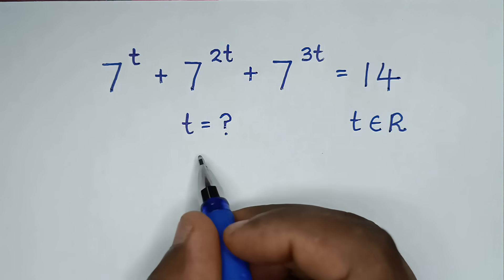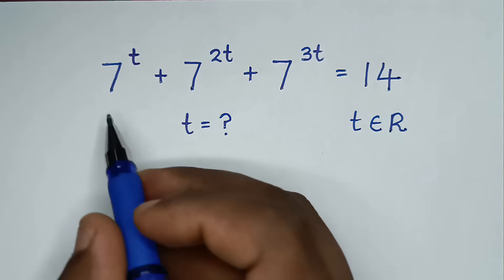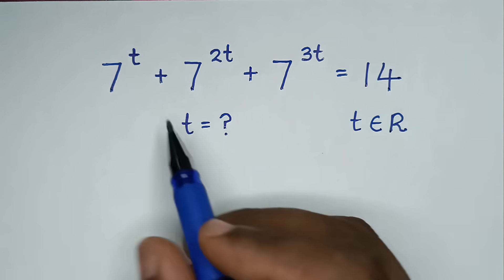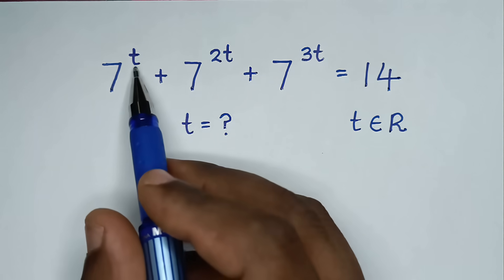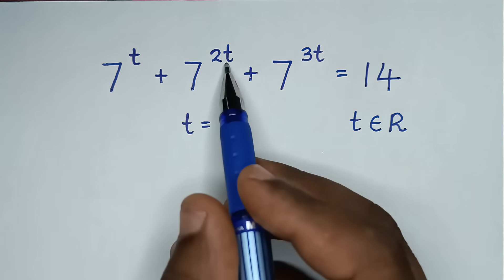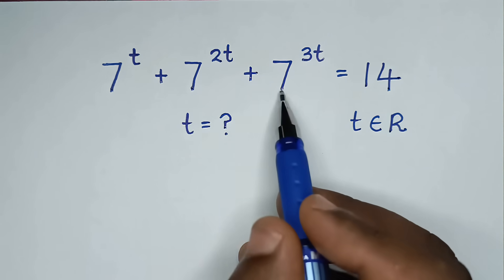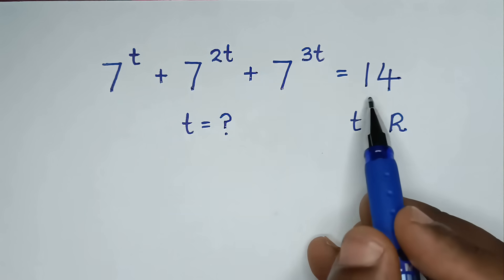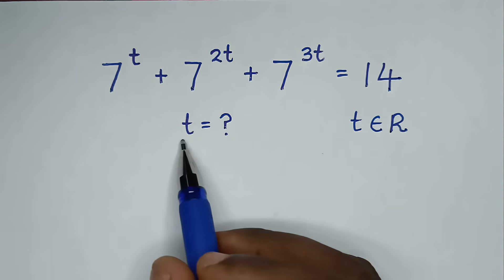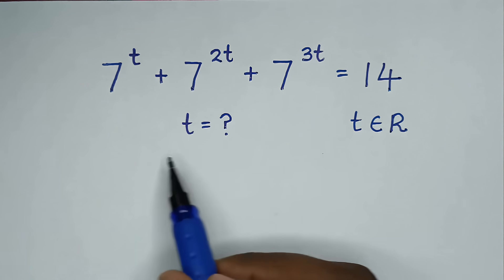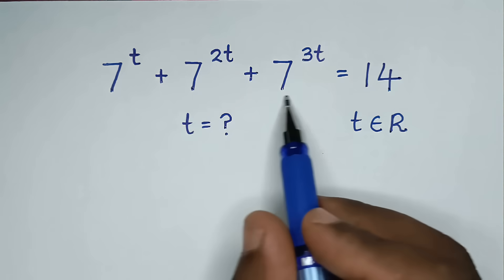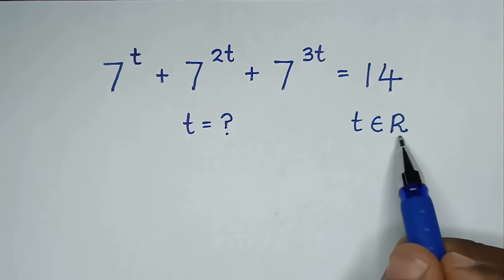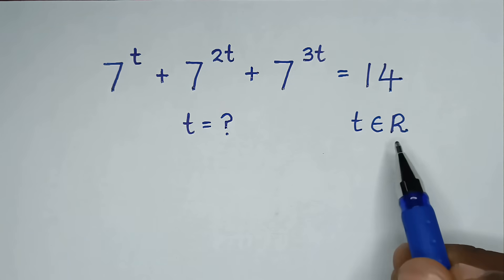Hello, you are welcome to solve this math problem, which is 7 power of t plus 7 power of 2t plus 7 power of 3t is equal to 14. To find the value of t from this equation, such that t is an element of the real numbers.